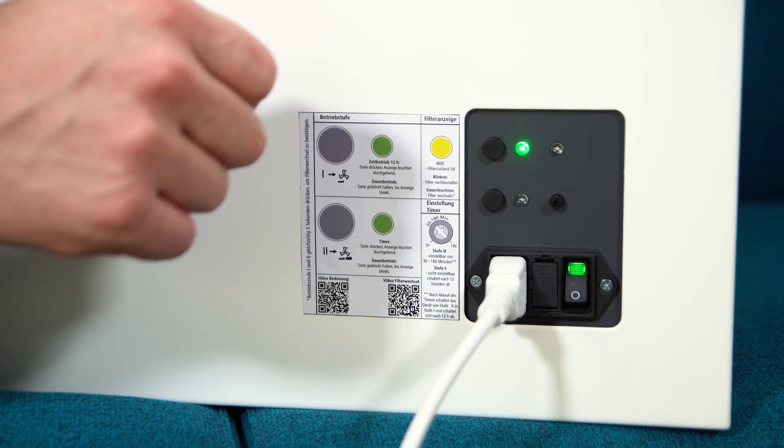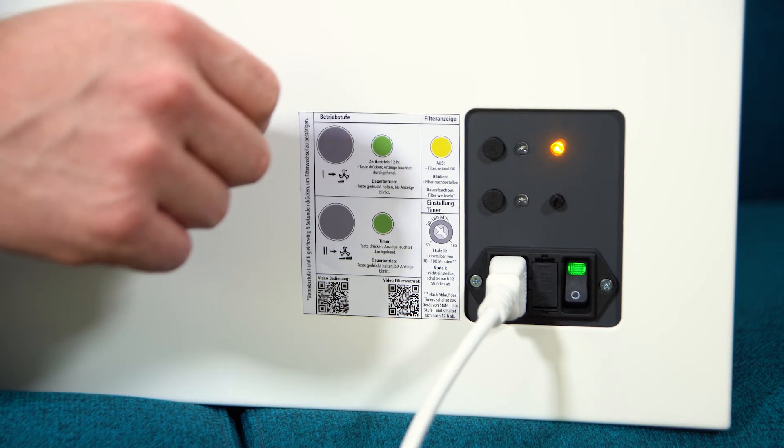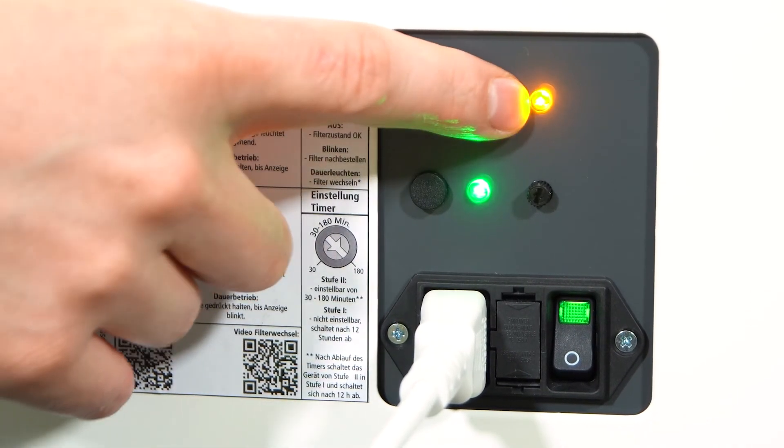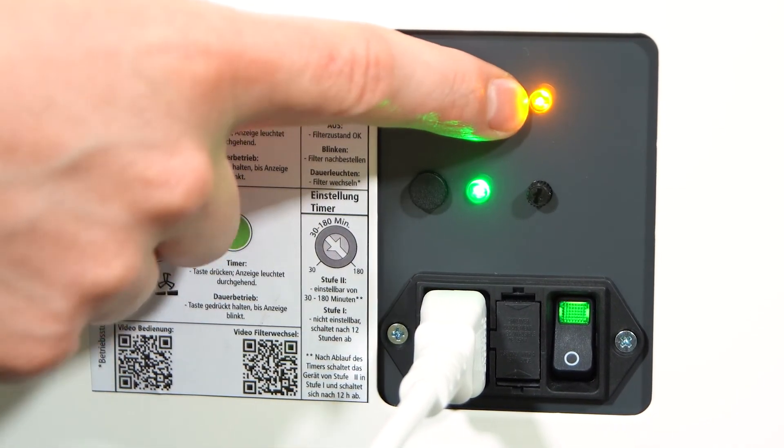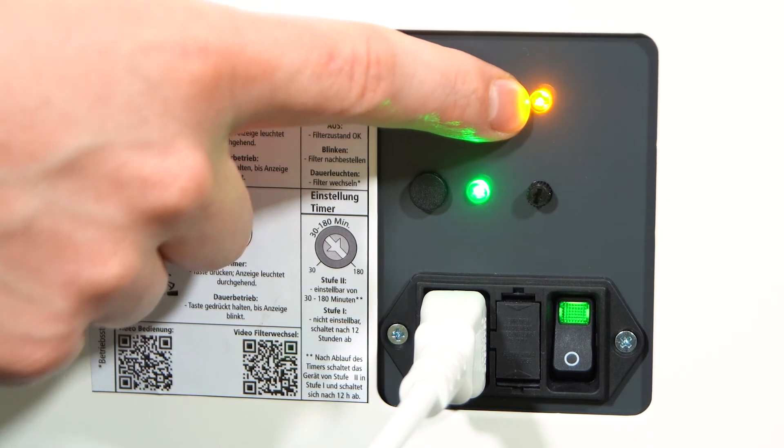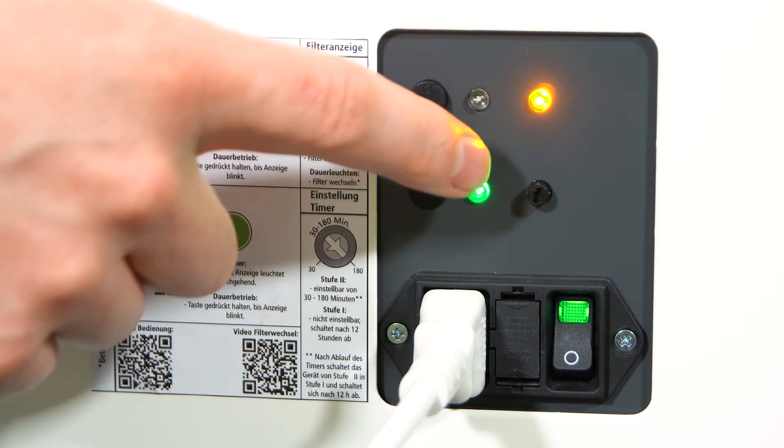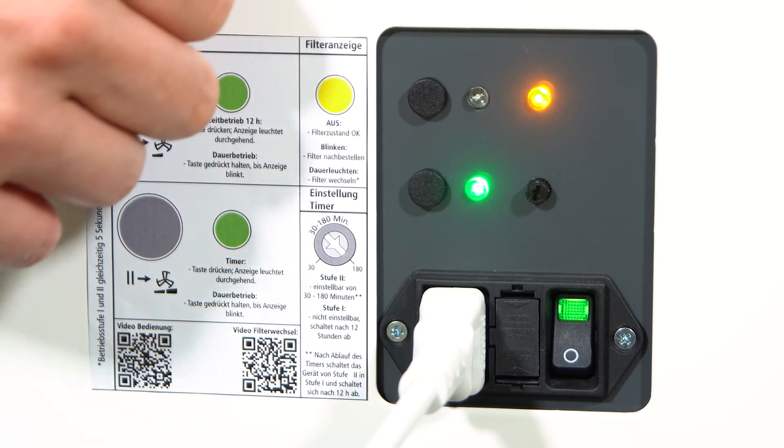As you can see, the yellow filter LED is now lit continuously. This means that the air purifier can only run at operating level 2, and the filter change is now required urgently. The operating level can no longer be changed in order to ensure the necessary air volume flow.